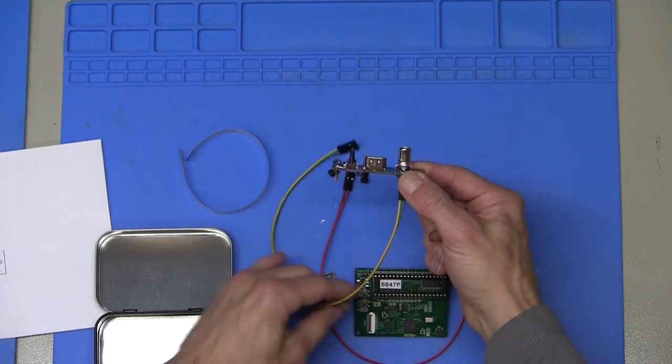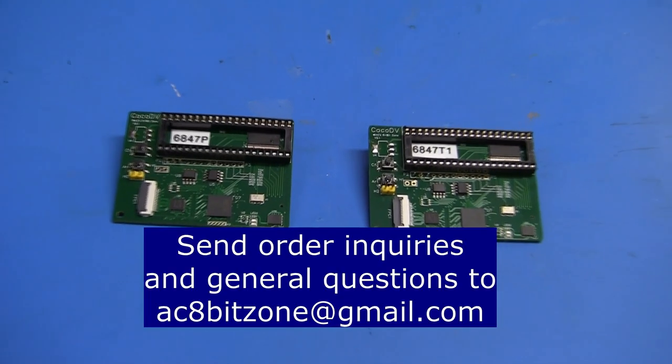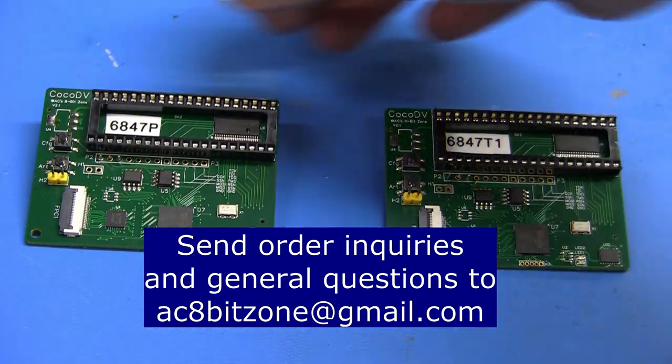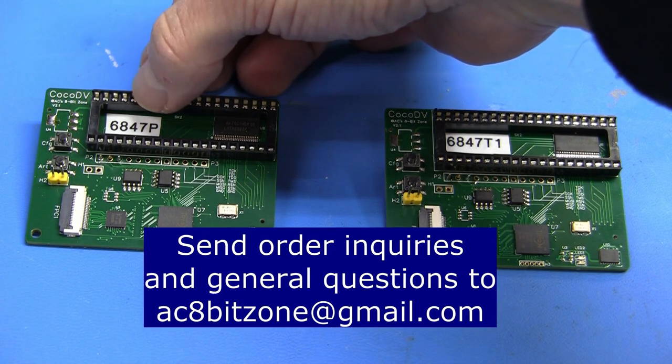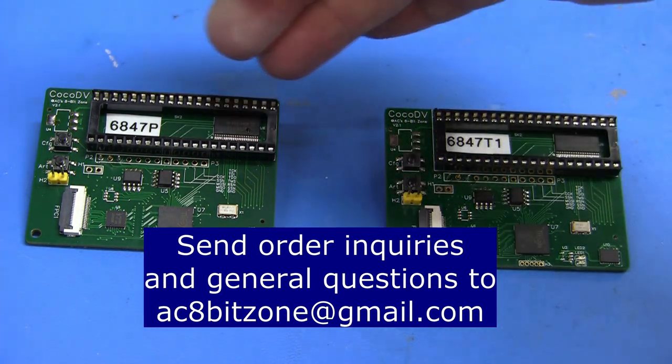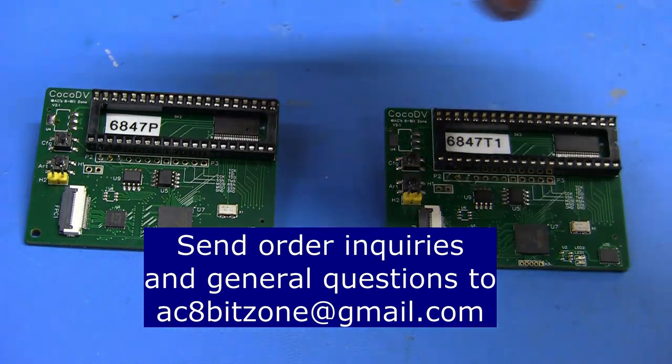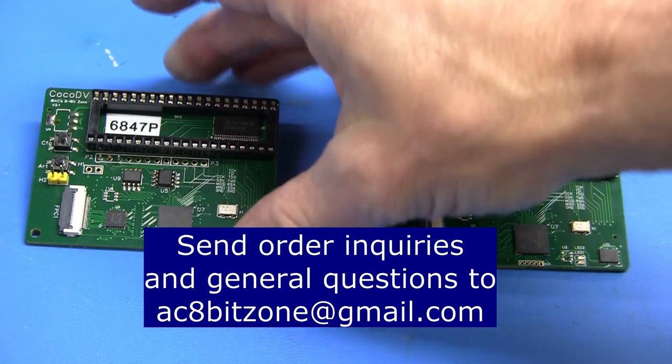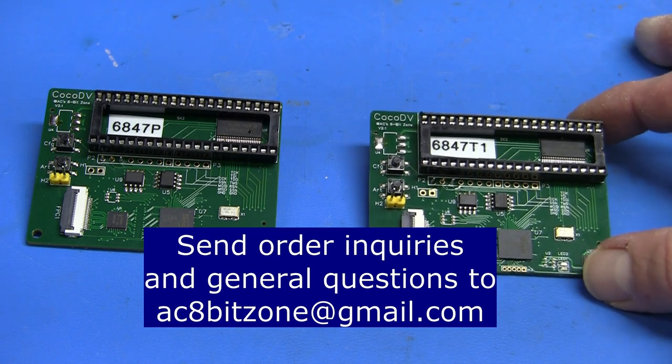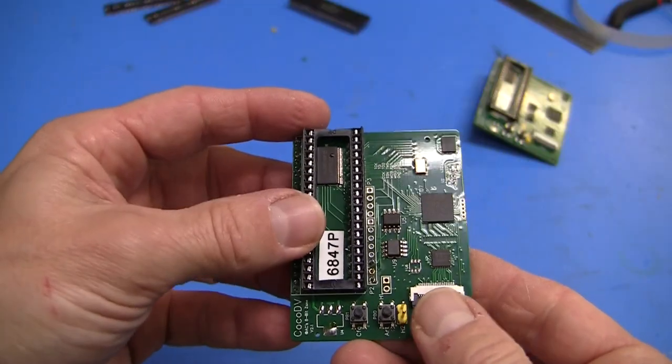At this time there are two firmware loads for Cocoa DV. The board is the same hardware in both cases, but there's the VDG with the 6847P and then there's the 6847T1. These are two firmware loads. When you order Cocoa DV, just let me know which machine you have. This one's most common and it'll come to you preloaded with that firmware. If you'd like to have the flexibility later to change to the other one, then order the programming cable.